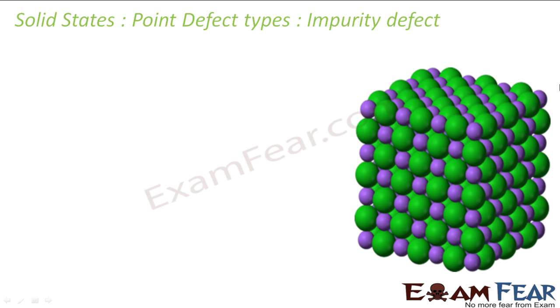The next type of point defect I will be discussing is the impurity defect. So here some foreign elements are involved. In case of impurity we will talk about impure, that means some foreign elements are involved.